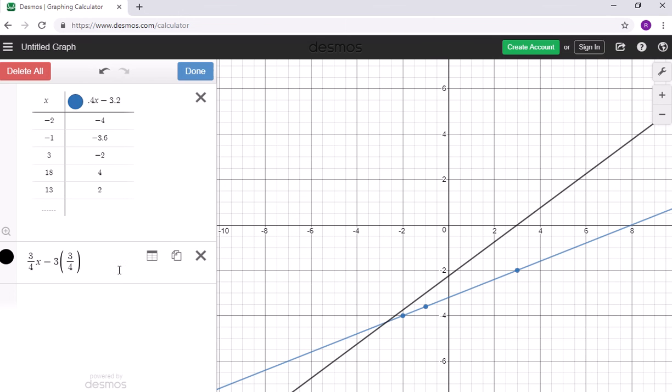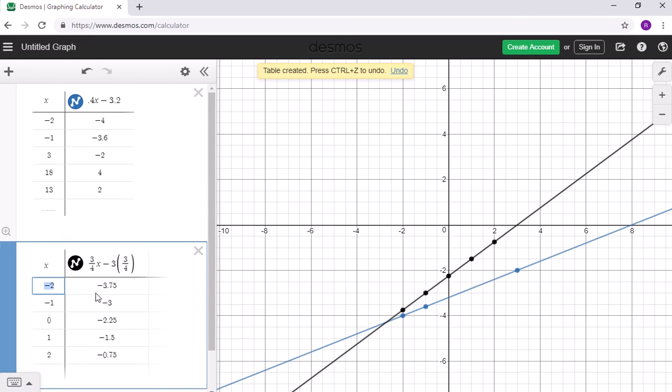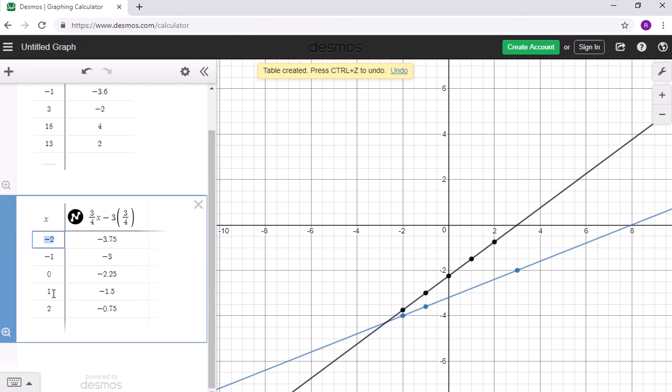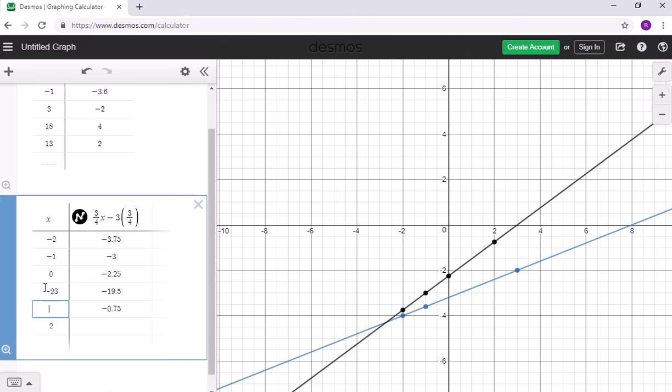Again, I want to switch it to a table and look at some of my values. I'm going to change this as negative 23, negative 13, maybe these are some of the values they're asking me, and negative 3 here. And then this will give you my table of values.